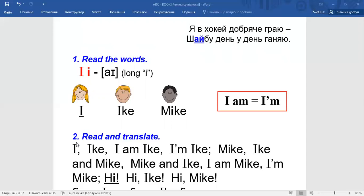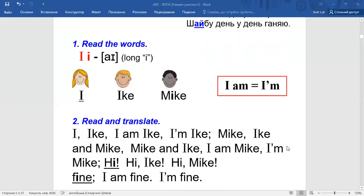Now let's look at task two. Read and translate. Listen to me and then be ready to read without my help. I. Ike. I am Ike. I am Ike. I'm Ike. Mike. Ike and Mike. Mike.